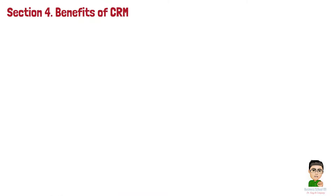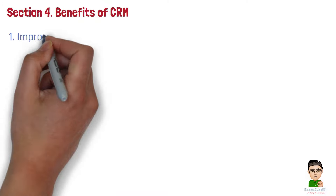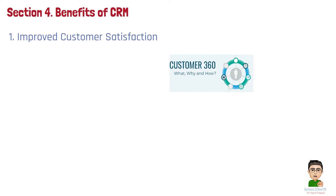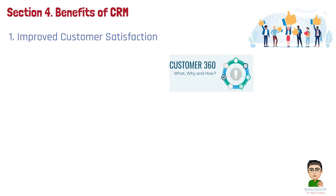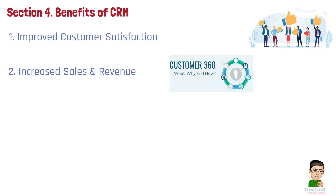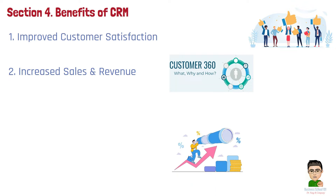Section 4: Benefits of CRM. Adopting a CRM system offers several benefits to businesses. Number 1: Improved Customer Satisfaction. By centralizing customer data and providing a 360-degree view of customer interactions, CRM enables businesses to deliver faster, more personalized service, improving customer satisfaction and loyalty. Number 2: Increased Sales and Revenue. CRM systems help businesses identify sales opportunities, automate follow-ups, and provide data-driven insights, leading to more efficient sales processes and higher revenue.